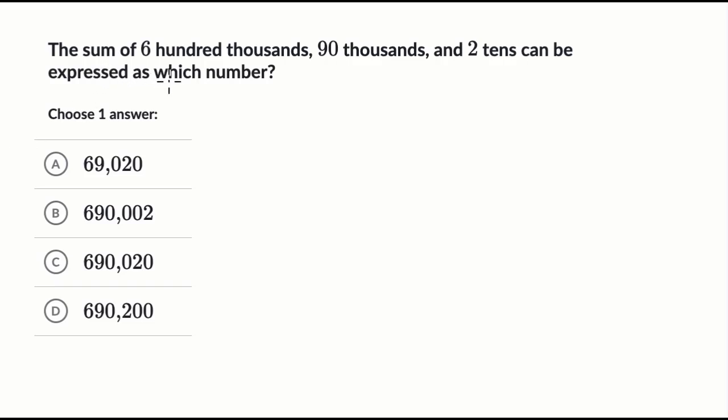We're told the sum of 6 hundred thousands, 90 thousands, and 2 tens can be expressed as which number? Why don't you pause this video and have a go at this before we do this together?